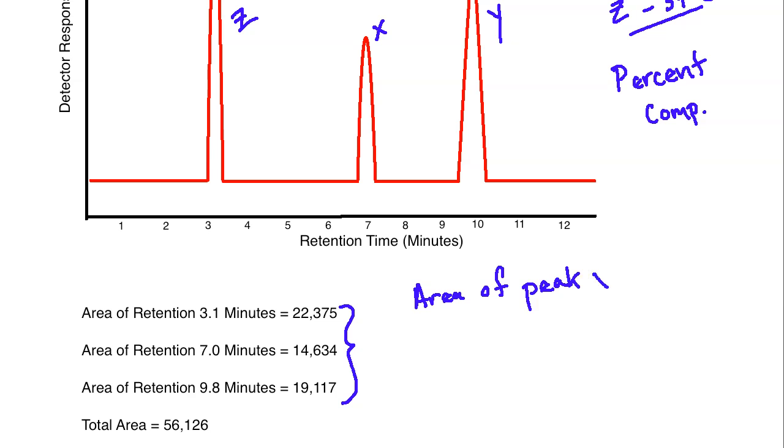What we would do is we would say the area of peak X, and we're going to divide that by the total area, and then multiply by 100 because we want it as a percent. Using that formula, you should be able to find the area for each of these over the total area, and then that should give you the percent composition.